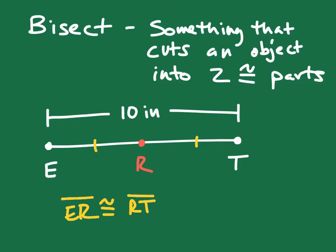I can say that ER is 5 inches and RT is 5 inches. If R is a midpoint — and remember from our last video that a midpoint cuts something in half — we're going to get two congruent parts out of that.